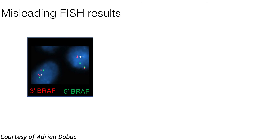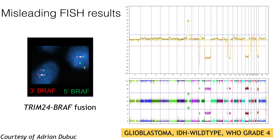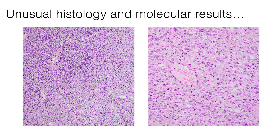BRAF-FISH was performed on this case, and there wasn't a rearrangement detected. However, given the somewhat unusual features of this tumor, next-gen sequencing was performed, and this BRAF fusion was in fact a TRIM24-BRAF fusion event and not the KIAA1549-BRAF fusion that's characteristic of pilocytic astrocytomas. Furthermore, the copy number profile of this tumor shows the characteristic features of glioblastoma — namely gains on chromosome 7, loss of 10, and CDKN2A loss. This is in fact a glioblastoma that happens to harbor a BRAF fusion event, and that's really what leads to that confusing morphology — certainly interesting in its own right, but certainly can lead to misclassification.